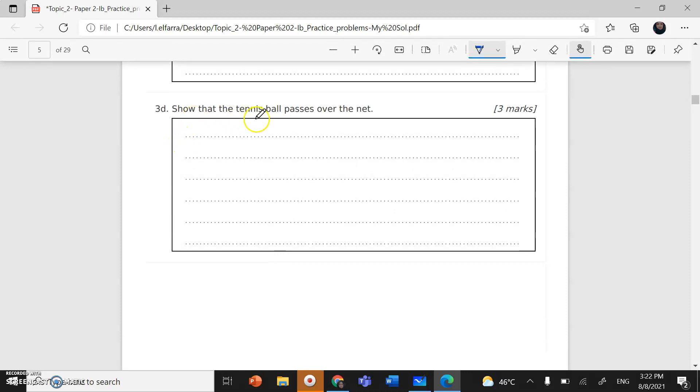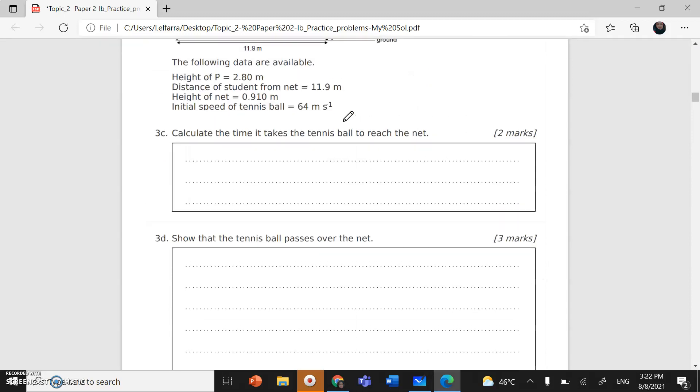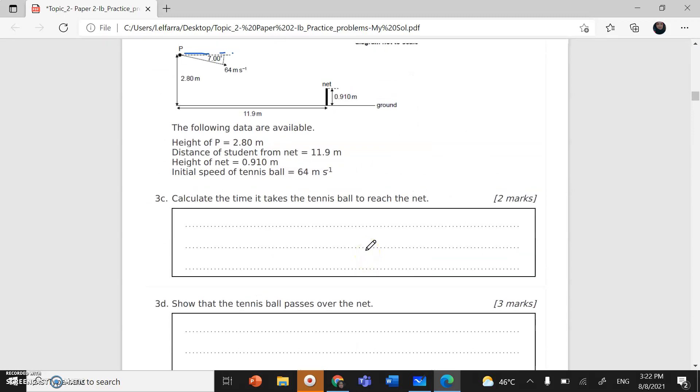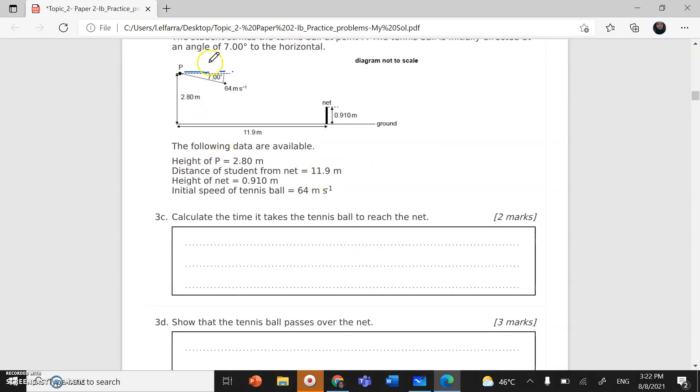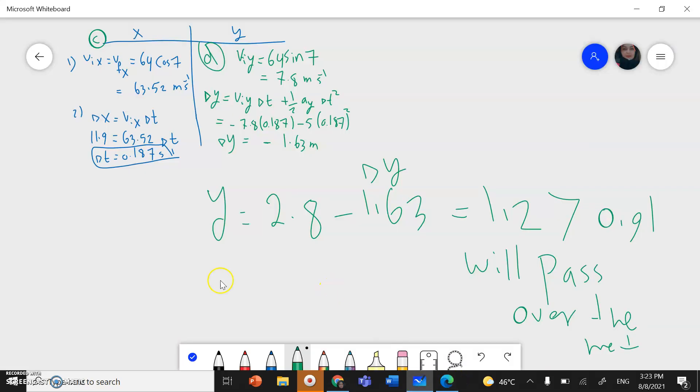We need to show that the tennis ball passes over the net. In order to prove the tennis ball passes over the net, we have to find the height of the ball. If this height is greater than the height of the net, which is 0.91 meter, then the ball will pass over the net.